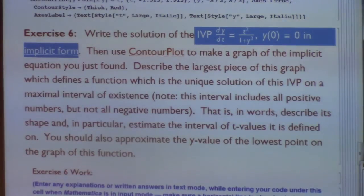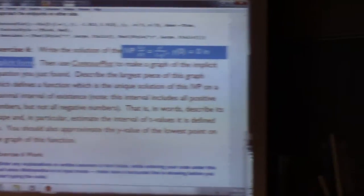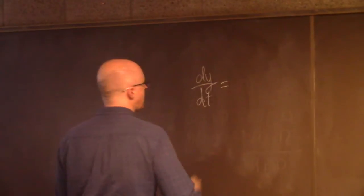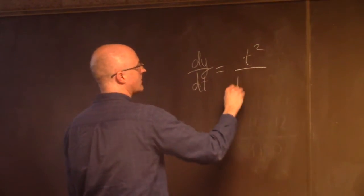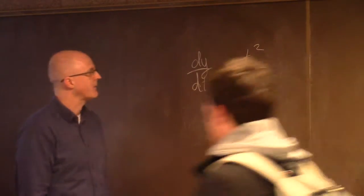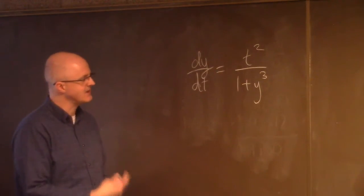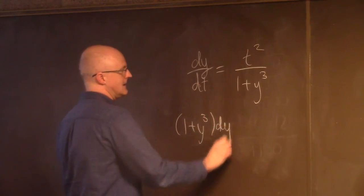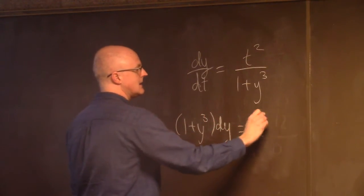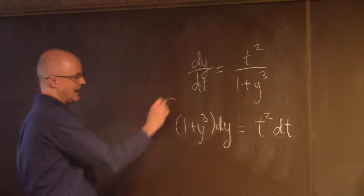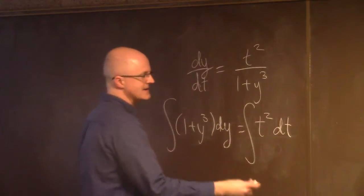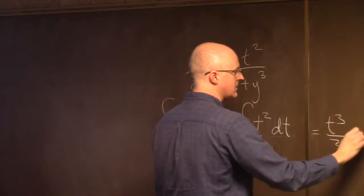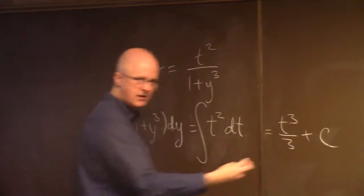So what's going on here? The reading is supposed to help you with this, but if you try separating variables, here's what happens. You've got dy/dt equals t² over (1 + y³). If we separate variables and bring the y's on the left and the t's on the right, you get that, which we now integrate. The right-hand side is plenty easy: t³/3 plus c.